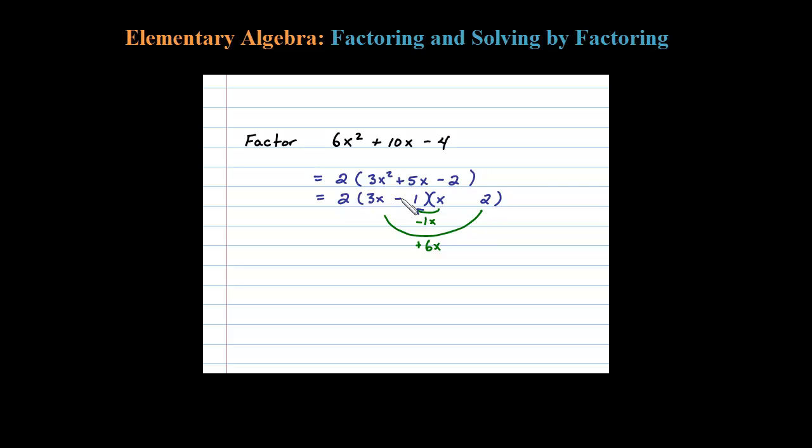So that tells me here the 1 better be negative and that 2 better be positive. Okay, we did it this way so that negative 1 times positive 2 is negative 2. Okay, so the end term checks out, and there we go.